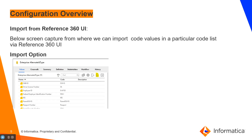First, we will see how to import code values from the Reference 360 UI. This screen capture will show you how to import code values for a particular code list. Whenever you open a code list, you will get an import option, and from there we can import code values into that particular code list.